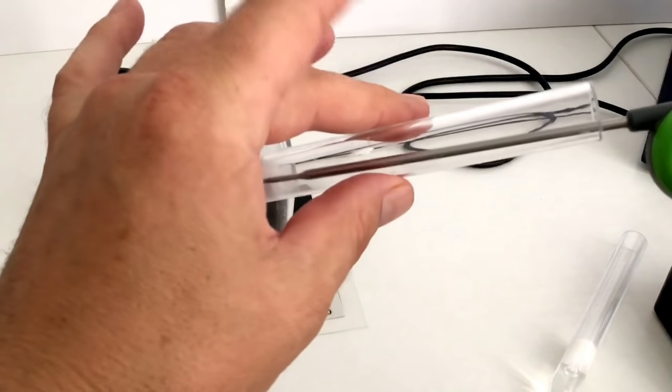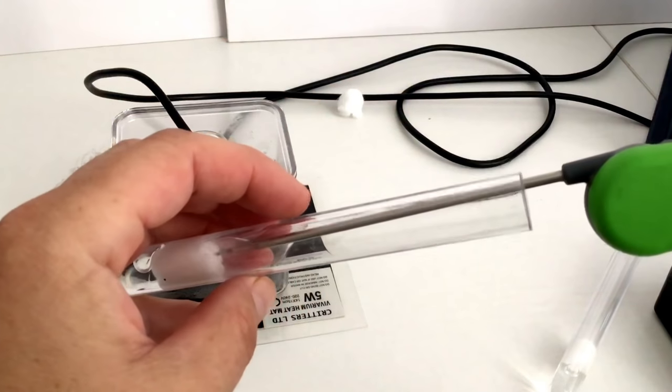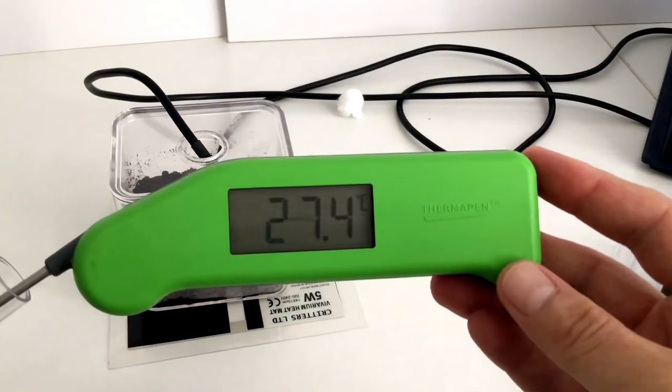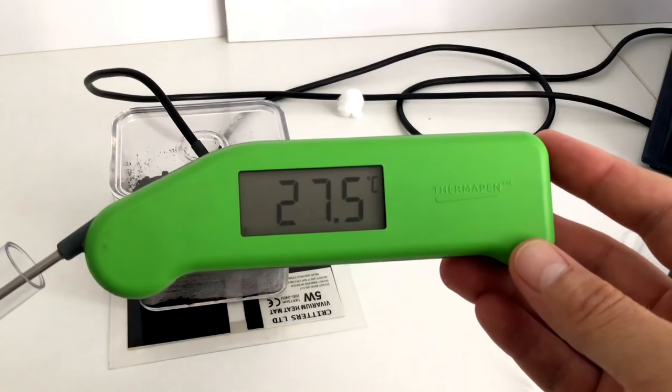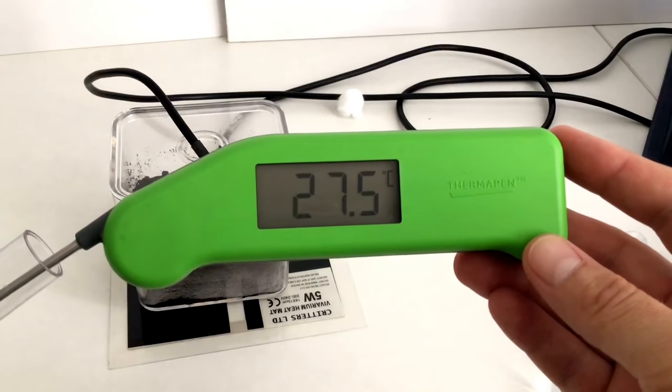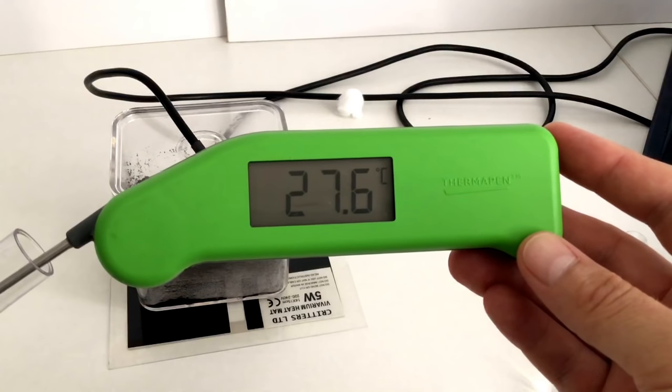And take a reading from this one. So again, in contact with the cotton. See what reading we're getting off that. So we've got 27.5. So interesting that one. Slightly lower.